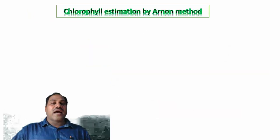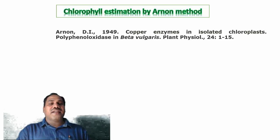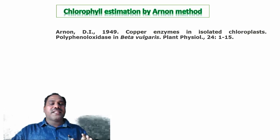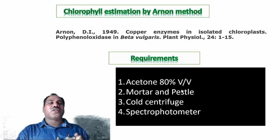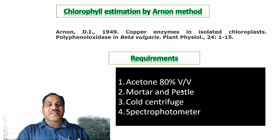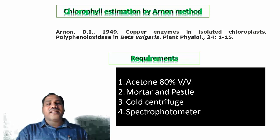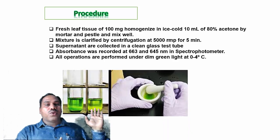One of the most important methods is the Arnon method of chlorophyll estimation, originally published by Arnon in 1949 in Plant Physiology. The requirements for this method are: 80 percent acetone for extraction, a mortar and pestle for homogenization of plant tissue, a cold centrifuge for clarification of the extract, and a spectrophotometer for measuring absorbance at 663 and 645 nanometers.